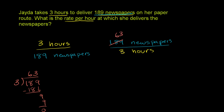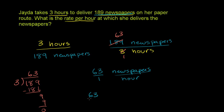And if you divide 3 by 3, you get 1. You have to divide both the numerator and the denominator by the same number. So now we have 63 newspapers for every one hour, which we can write as 63 over 1 newspapers per hour. Since 63 over 1 is the same as 63, the answer is 63 newspapers per hour.